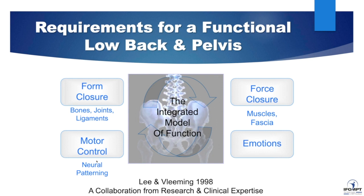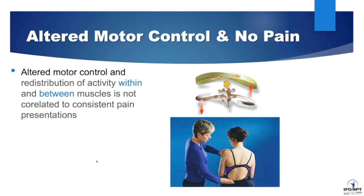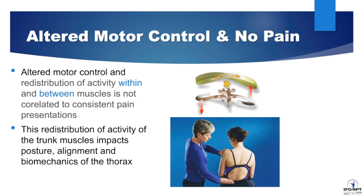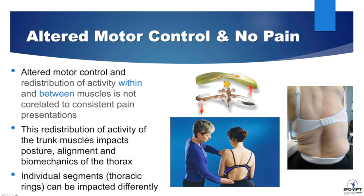Returning to motor control and altered motor control — remember, altered motor control presents with a redistribution between muscles but also within muscles, and it's not correlated to any consistent pain pattern. Just because you have this redistribution doesn't mean we can say where it's going to hurt. This redistribution of activity can have a huge impact on the posture, alignment, and biomechanics of the thorax. What we should see in a healthy thorax with rotation is a lovely, gentle, even concave curve towards the side the person is turning towards.